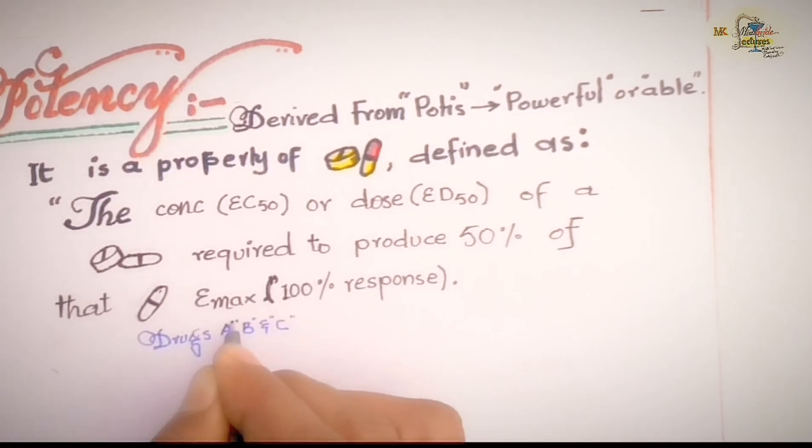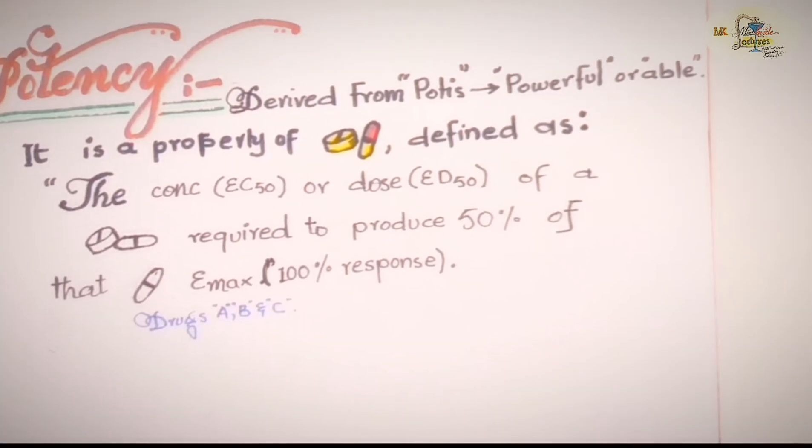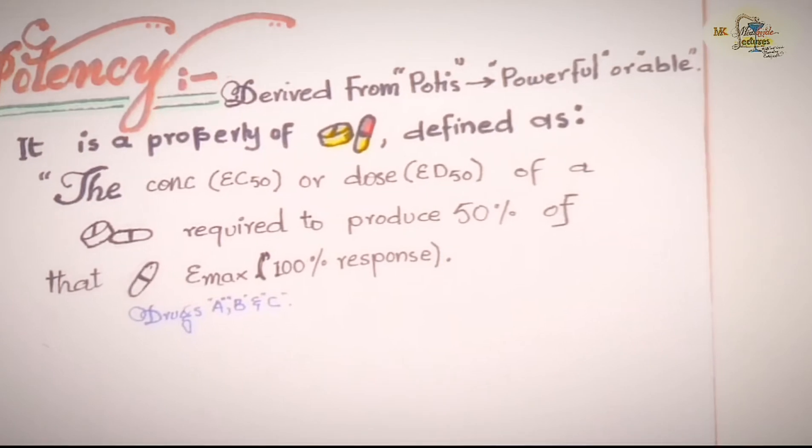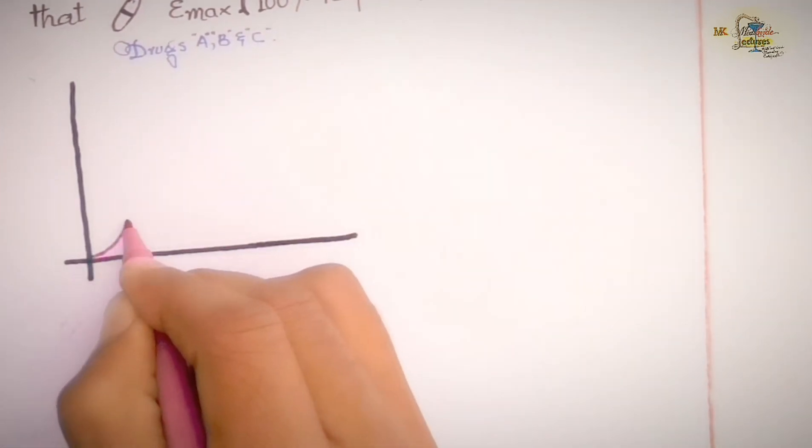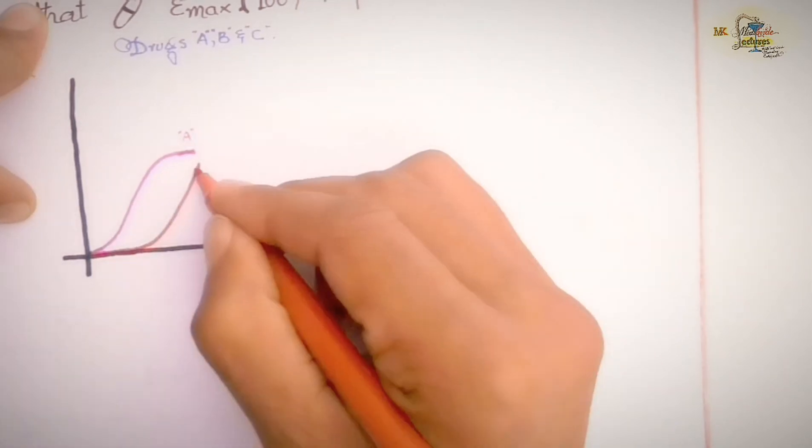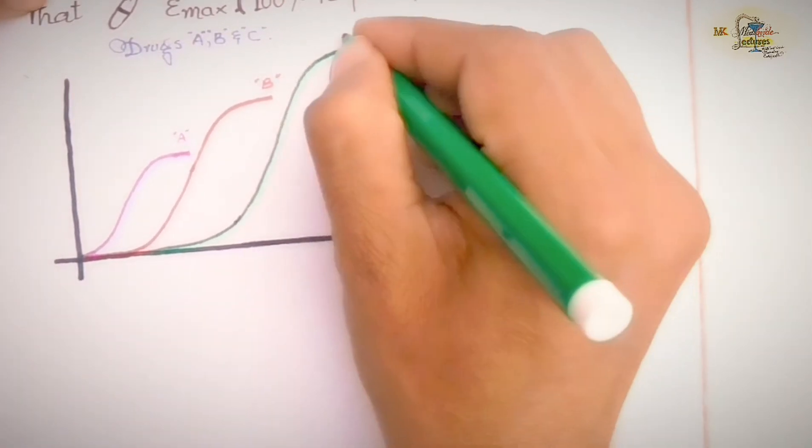For example, we have three drugs named A, B, and C of same class and they are given to patients and their dose-response curves are obtained as shown in the diagram in which the response is taken on the y-axis and dose of drug is taken on the x-axis.